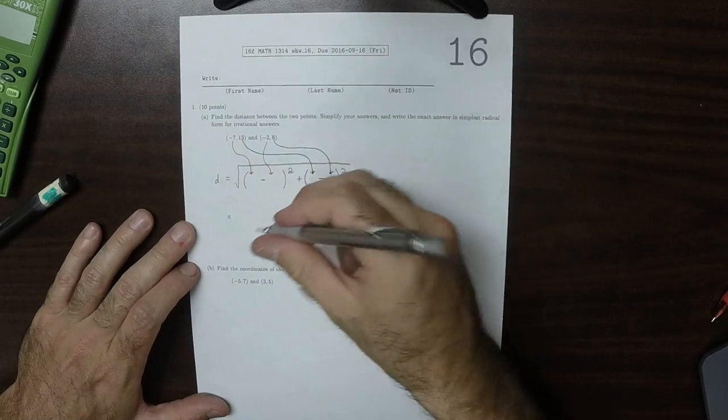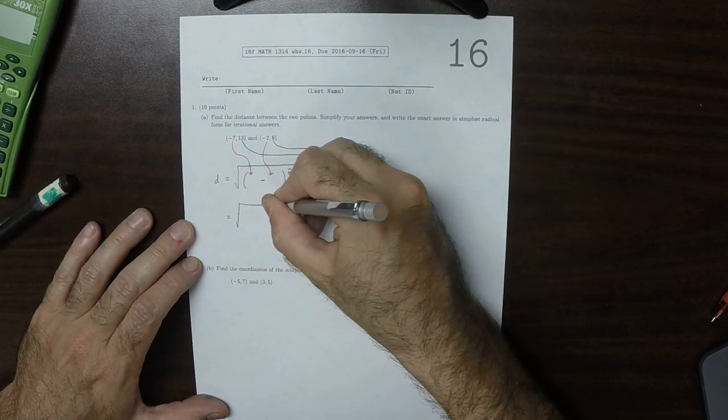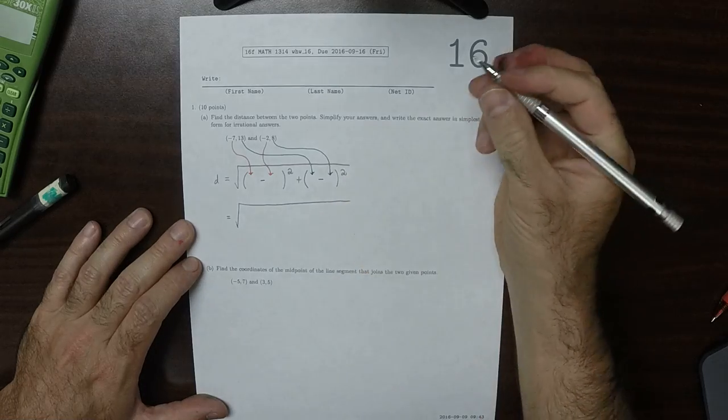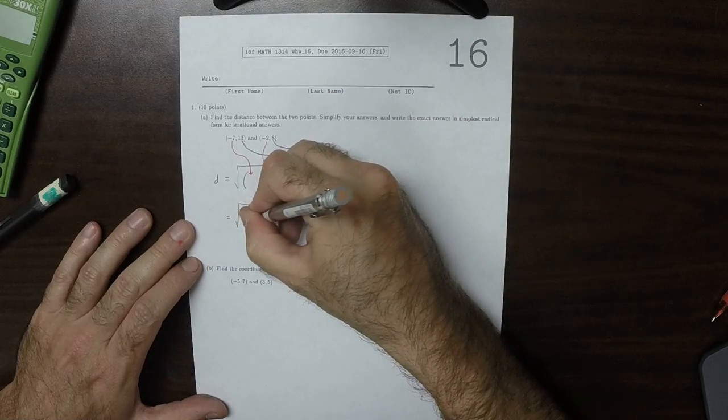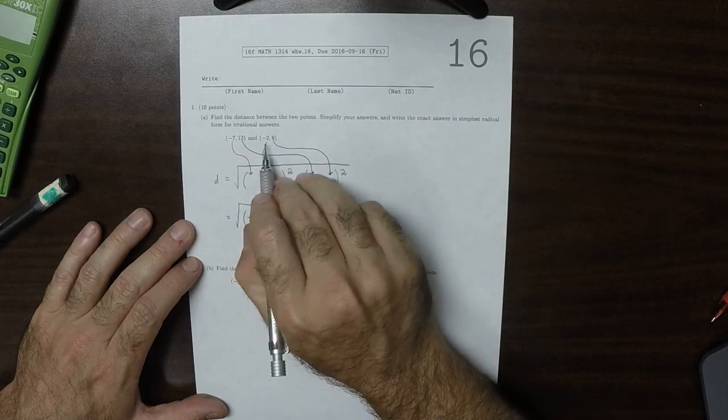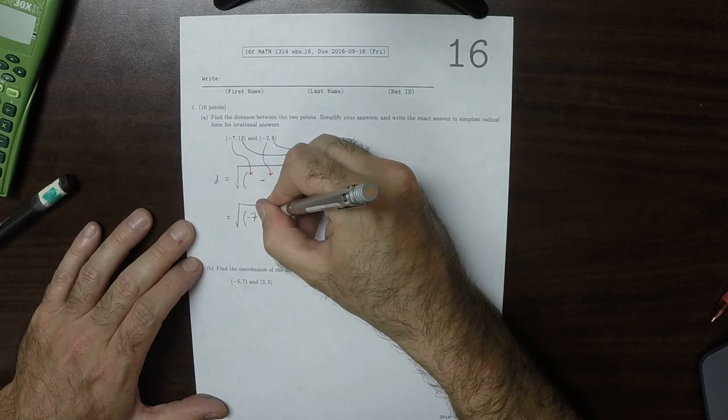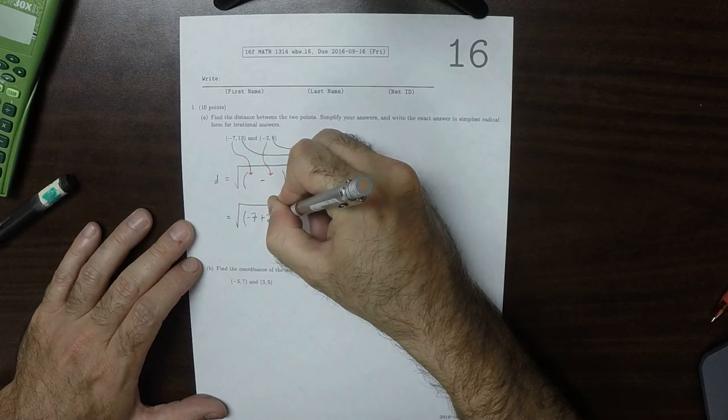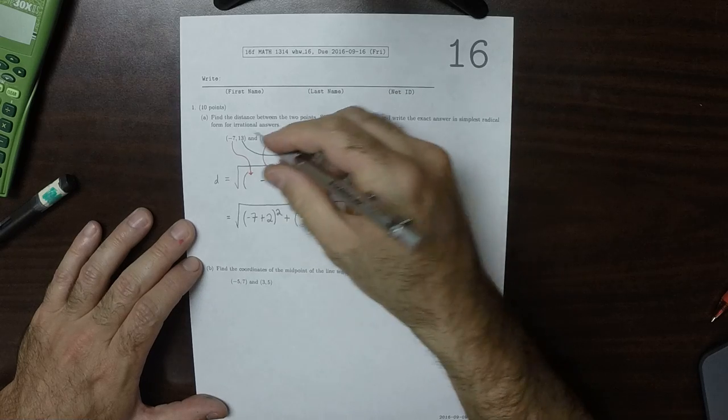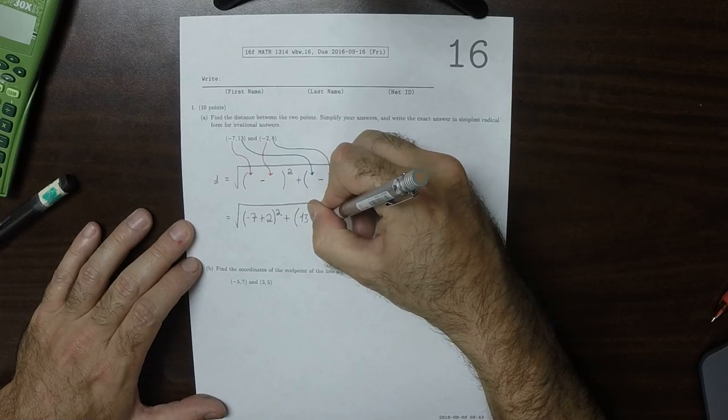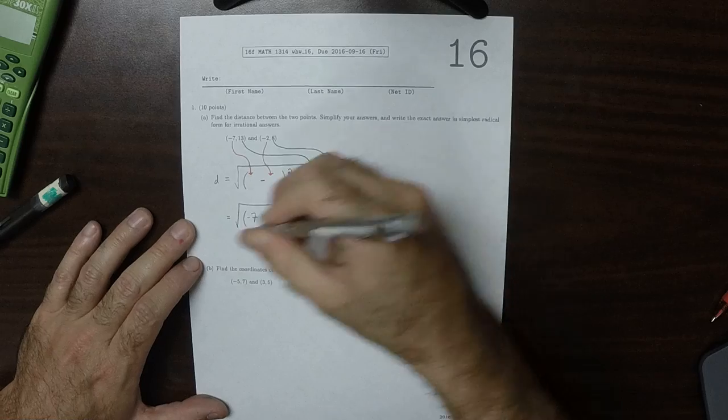So that would be the square root of negative 7, and then minus negative 2, so that would be plus 2, square that much. And then plus 13 minus 8, square that much.